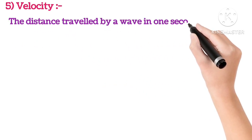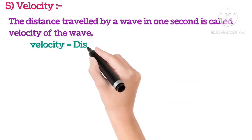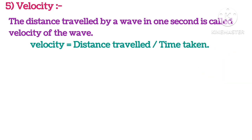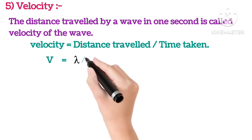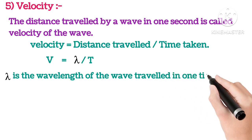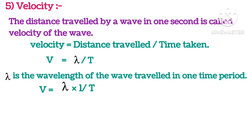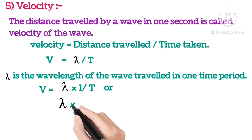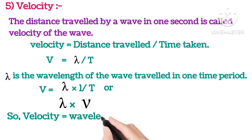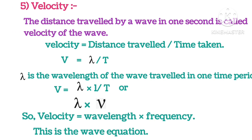The distance travelled by the wave in one second is called the velocity of the wave. Velocity equals distance travelled divided by time taken, which can also be written as wavelength divided by time period. Since 1/T is also the frequency (the reciprocal of time period), velocity equals wavelength multiplied by frequency. This is the wave equation.